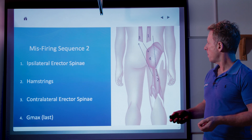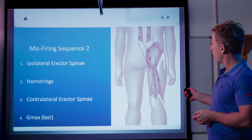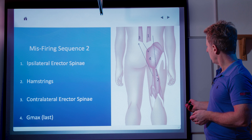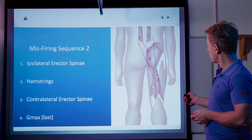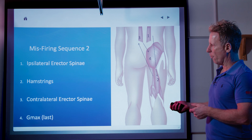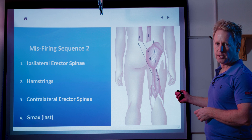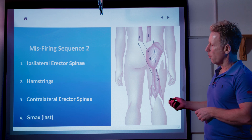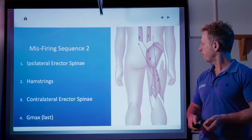Look at misfiring sequence number two. Now number one is the lower back — it does all the work, then it goes to the hamstring, then the opposite side of the lower back, then the gluteus maximus. Again, glute max is number four. In this case when you're walking or running, the back hurts because it's lifting your leg. Why? Because the glute is not working as well. Why? Because of the psoas. Why? Because of the hip and it's protecting all that.